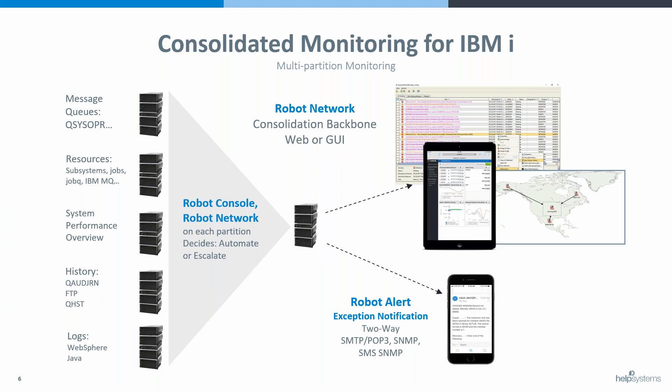Robot Network gives you so much more flexibility. With Robot Network you can view all your systems — maybe you've got five systems, and instead of bouncing between all five you have one screen where you can see all the events coming in. One place to monitor everything, and you can alert directly from here as well to consolidate your escalation.